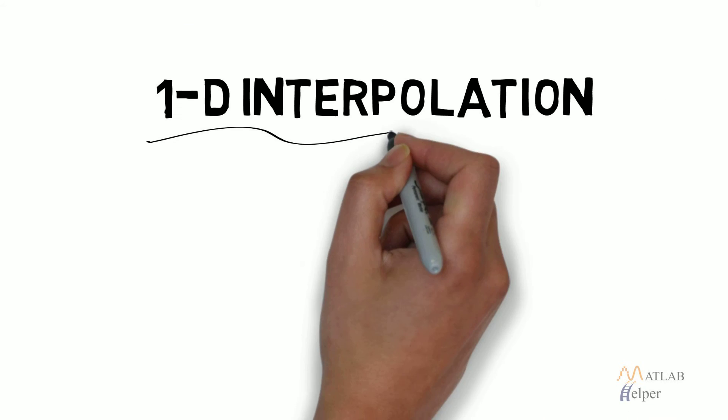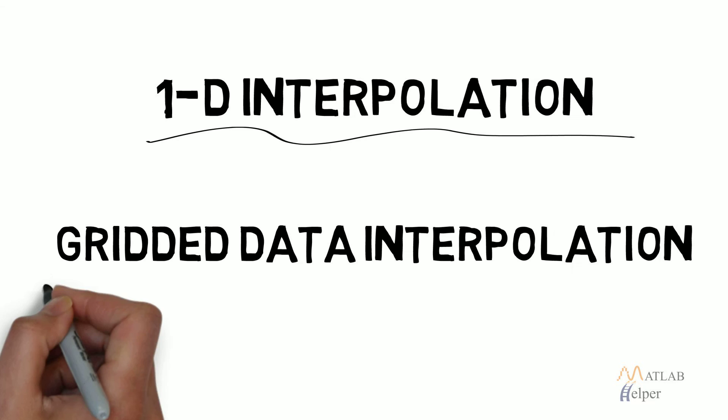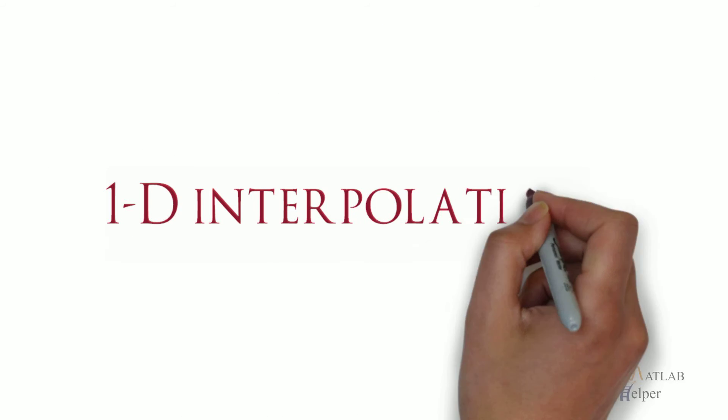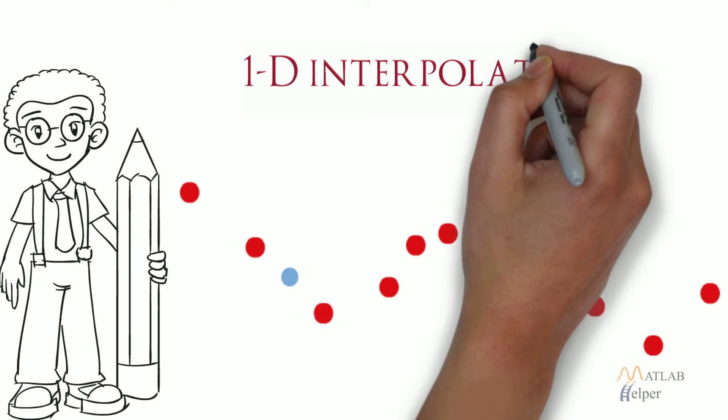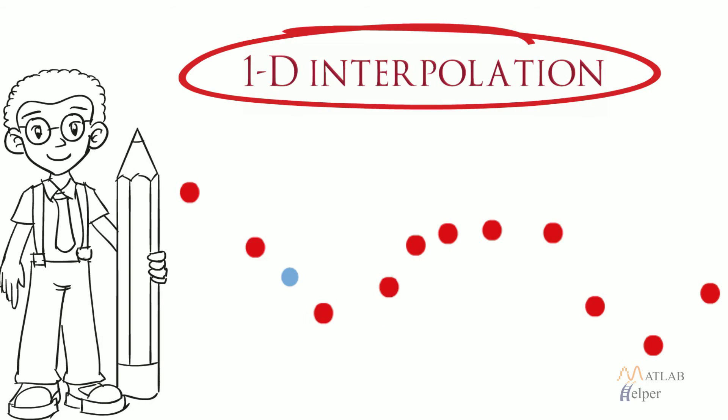There are very few varieties of interpolation discussed here. First one, 1D Interpolation. When we wish to find out the new points between two existing points, it is called 1D Interpolation.